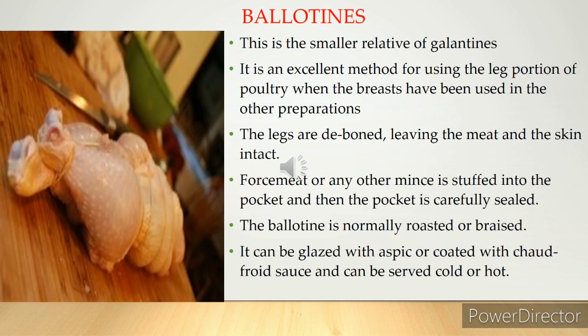Ballotines are similar to galantines — the method of cooking is the same — but they are the smaller relatives. A ballotine is boneless meat that is stuffed and rolled into a bundle. Like galantines, they are poached but may also be baked, braised, or poached in their skins, and served hot or cold as an entrée. A ballotine is typically prepared from a boneless leg of poultry stuffed with force meat, making excellent use of the leg when the breast has been used elsewhere.